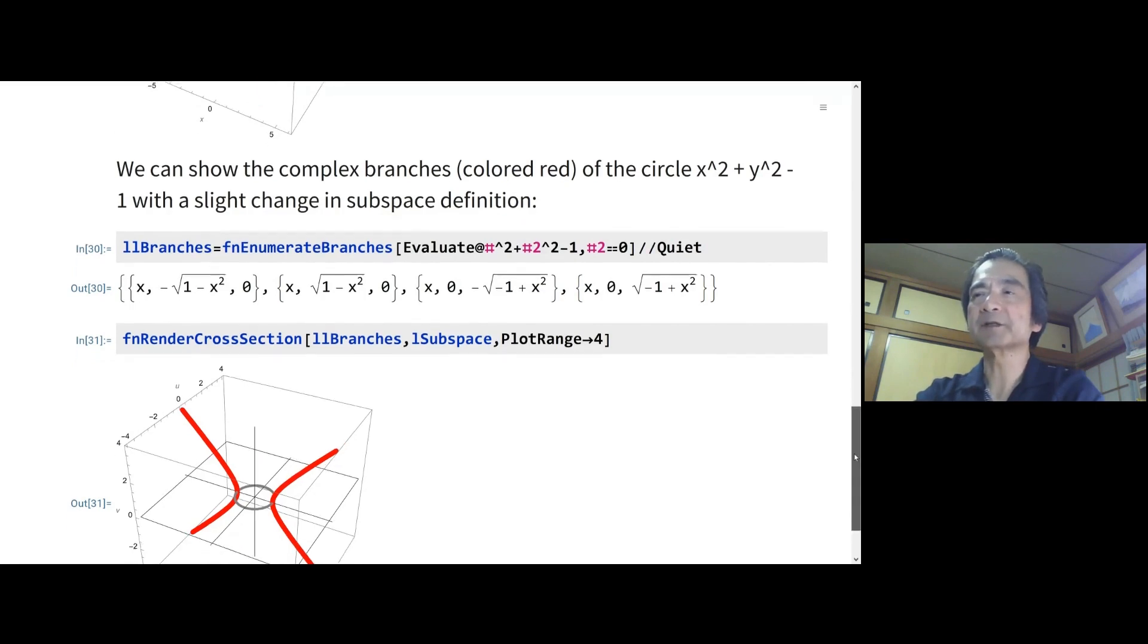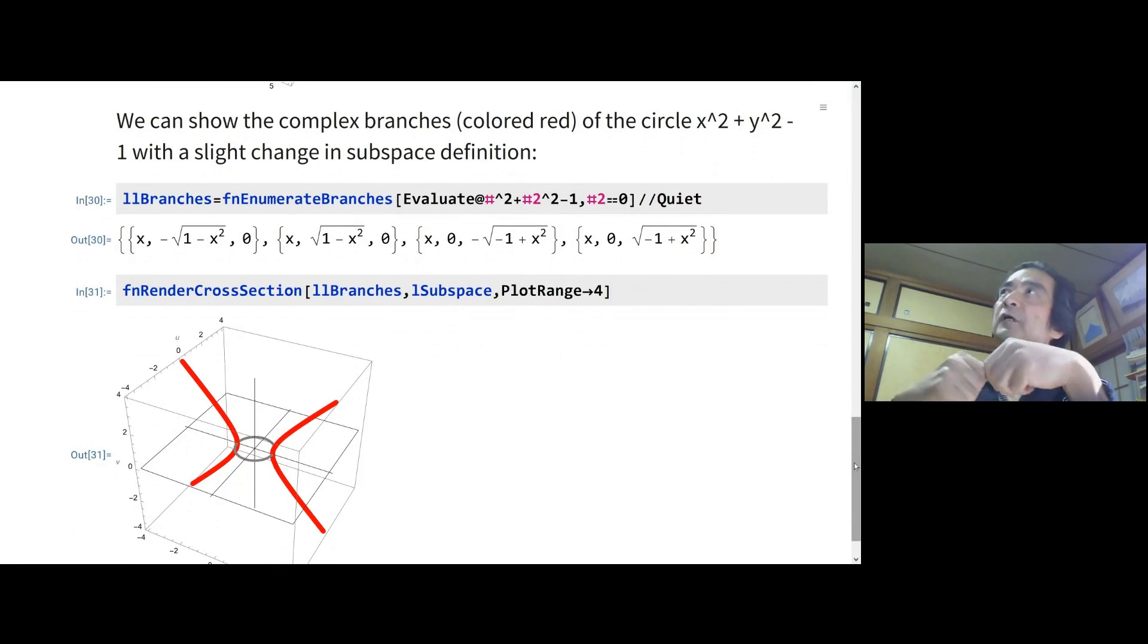We can apply this concept - first expand the polynomial into a complex domain and then reduce it and solve this underdetermined system equation. We can apply these steps for any planar curves, like this is a very simplest example, a circle. In this situation, you can notice that the second argument of the enumerate branches is number 2 equals zero. That means we will take the subspace x, u, and v, not x, y, u. I will take x, u, v instead.